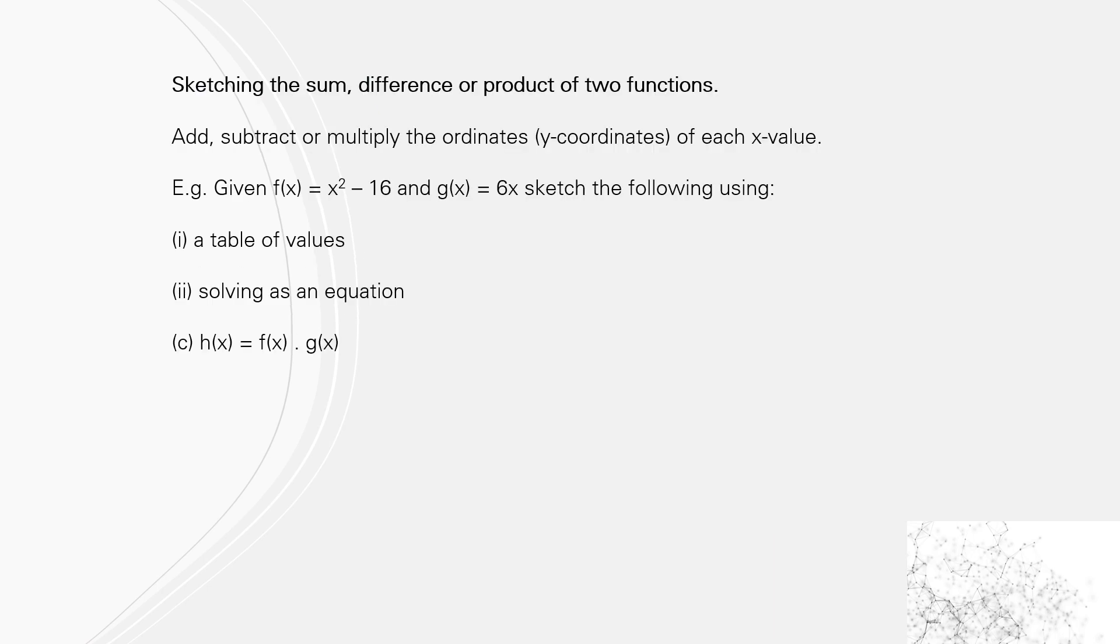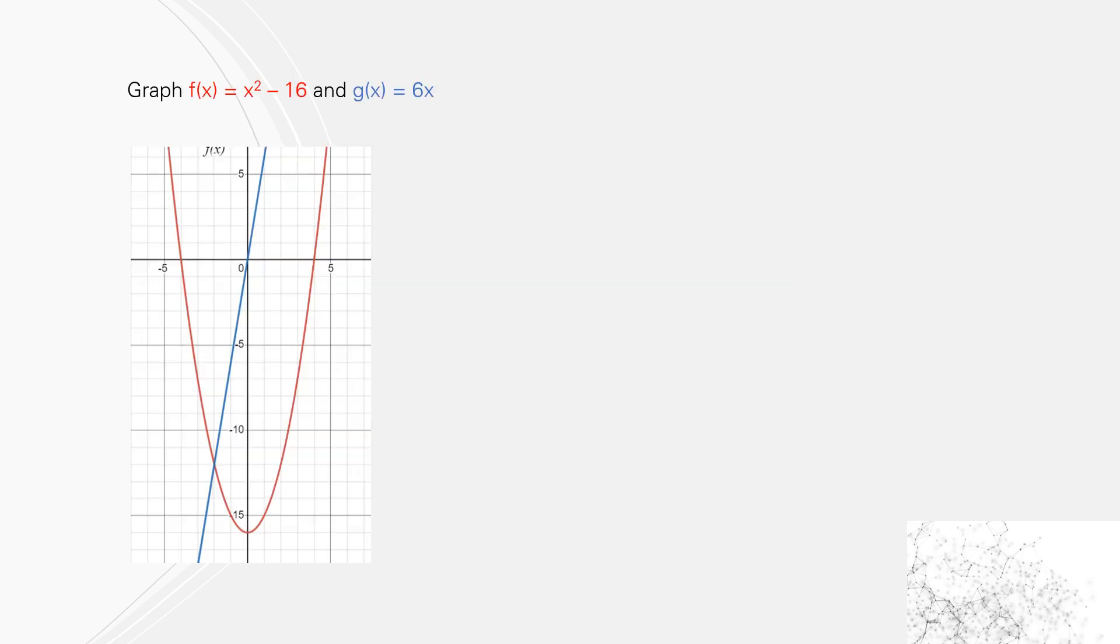So the product's a really difficult one. So we'll graph it and then we'll work from there. So here's our original ones. The beauty of this one is that when each function is at zero, zero multiplied by anything is zero. So that's going to be always where it crosses the x-axis.